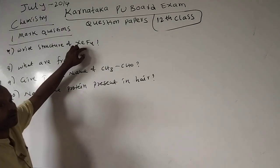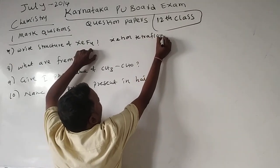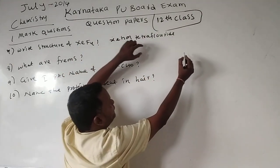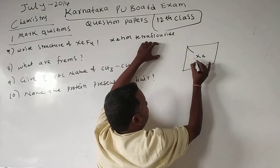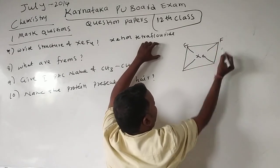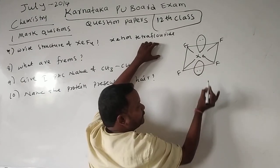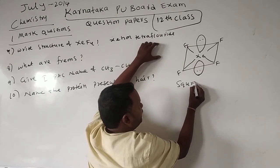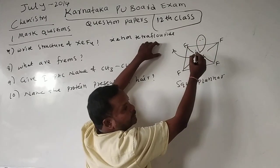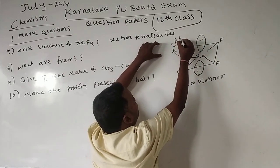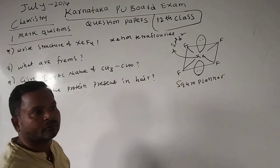Seventh question: write the structure of xenon tetrafluoride, XeF4. Xenon is the central atom with four fluorine atoms around it and two lone pairs. It has a square planar geometry. Xenon exhibits sp3d2 hybridization, and with two lone pairs in axial positions we get a square planar structure.